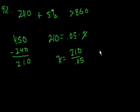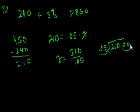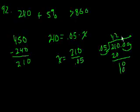So 0.05 goes into $210. Add some decimal points. That's the same thing as 5 going into $21,000. 5 goes into 21 four times, 4 times 5 is 20. Bring down the 1 to 2. 5 goes into 10 two times, 2 times 5 is 10. We're done.